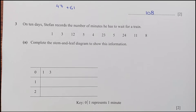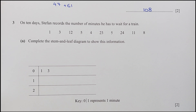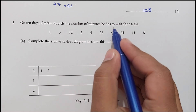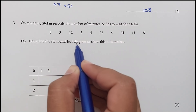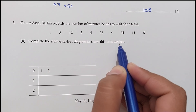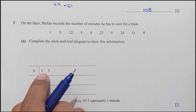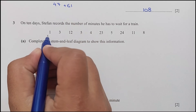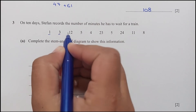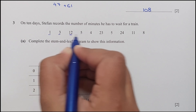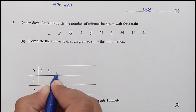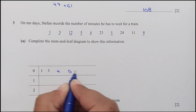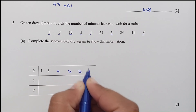Question number 3: on 10 days, Stefan records the number of minutes he has to wait for the train. Part A: complete the stem and leaf diagram. With stem 0, the leaves are 4, 5, 5, and 8. With stem 1, we have 1 and 3.